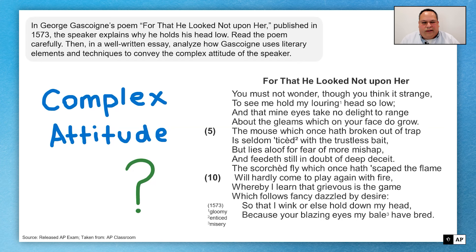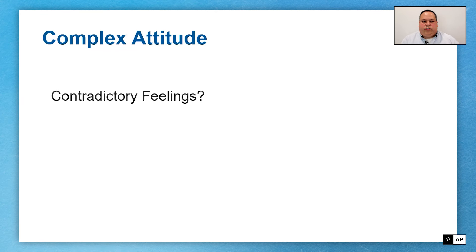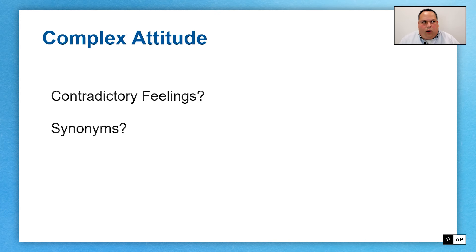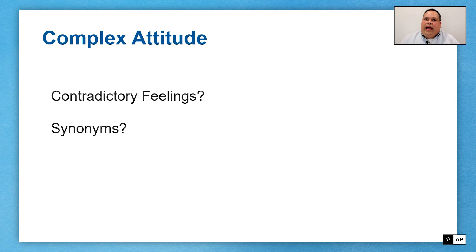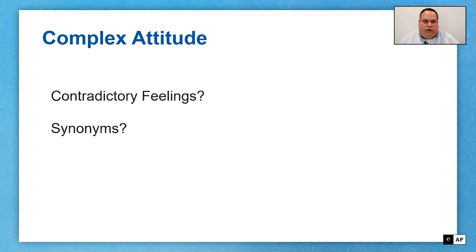So what do we mean by complexity? Are we looking for contradictory feelings — antonyms, if you will? Well, that's not necessarily the case. You might find that at times, but not always. Are we looking for synonyms? The answer to that is a very clear and resounding no. If you say that someone is sad and then follow it up with 'the person is depressed or gloomy,' you're not really building the argument — you're not providing a different aspect or adding nuance. You're simply giving another word that means the same thing.